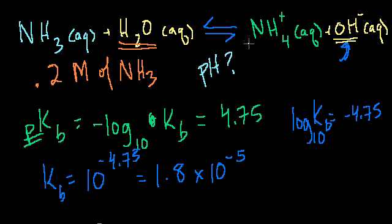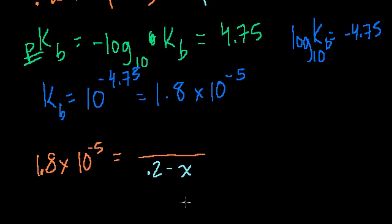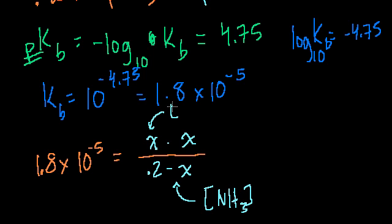And so on the right-hand side, we're going to have x of NH4 and x of OH. So this is the concentration of ammonia. And then we have x times x. This is the concentration of NH4 plus.